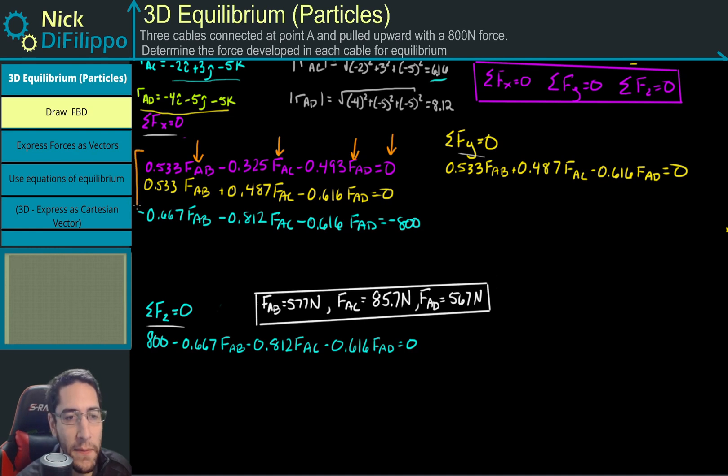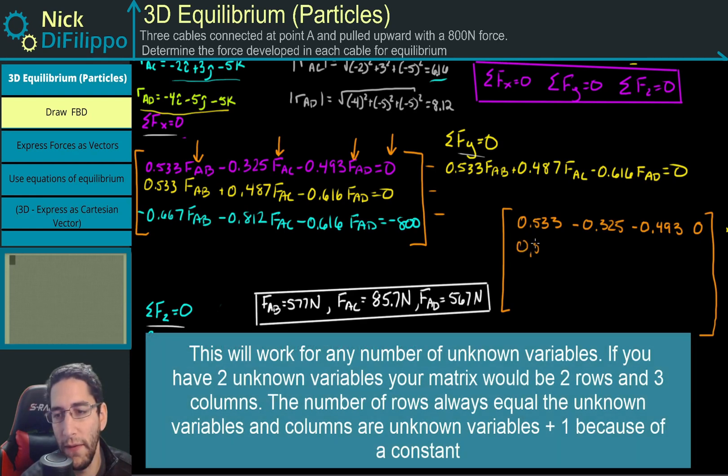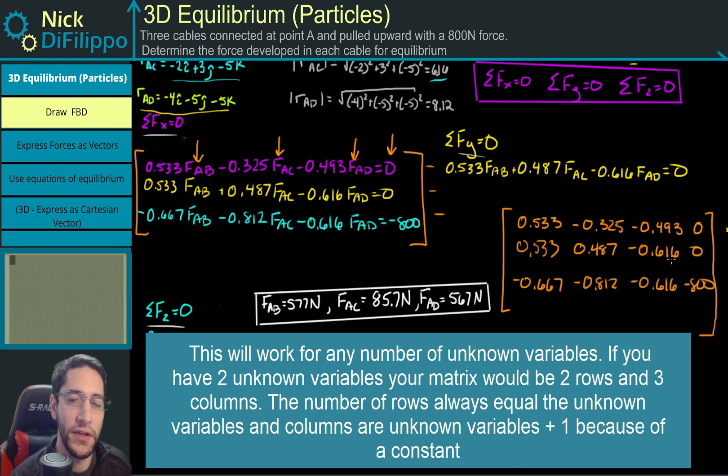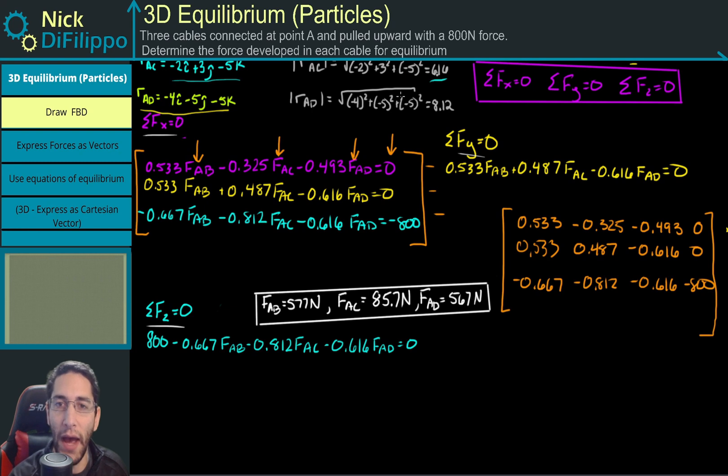I want to take all of the coefficients. This is going to be 0.533, minus 0.325, minus 0.493, and 0. The matrix will have three rows and four different columns. So I'll have 0.533, 0.487, minus 0.616, zero, and minus 0.667, minus 0.812, minus 0.616, and minus 800. When you're doing this, be sure everything lines up and your constants are on the other side with all your minus signs.